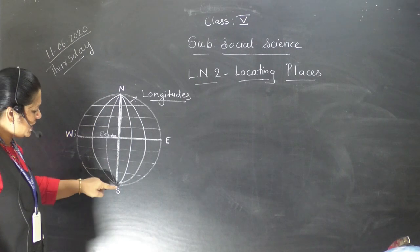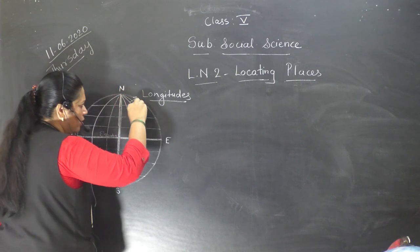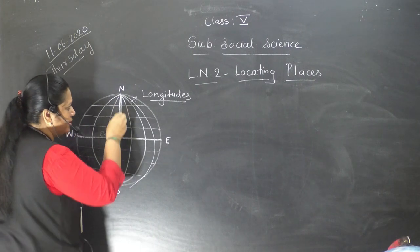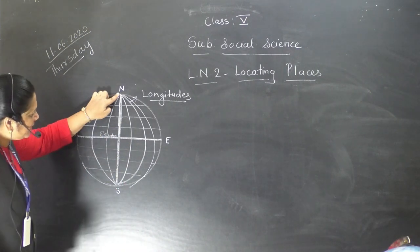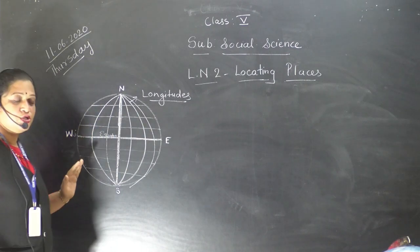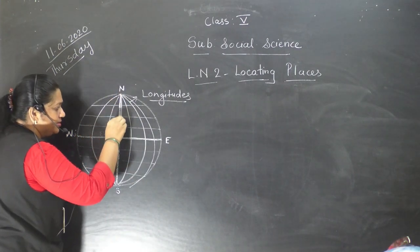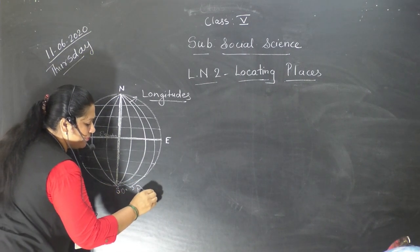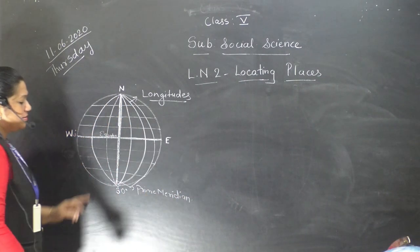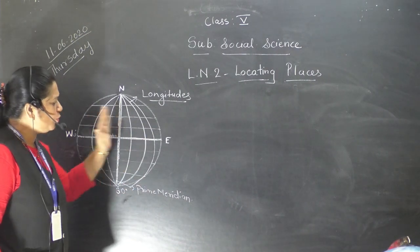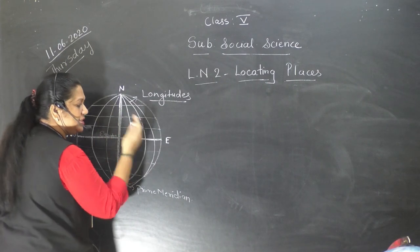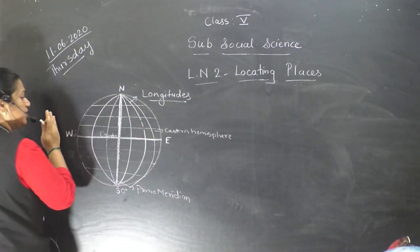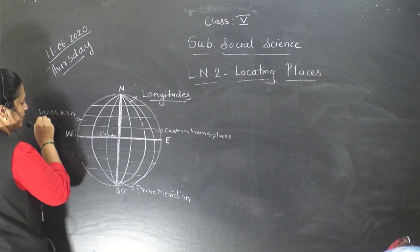These imaginary lines are also of equal length. Now, just as there is an equator, there is also one line which passes exactly through here and divides the earth into two parts. This imaginary line is marked as zero degree and it is called the prime meridian. The prime meridian divides the earth into two parts.